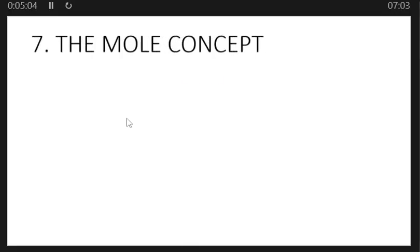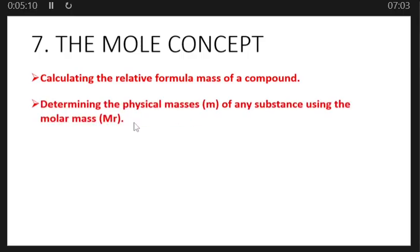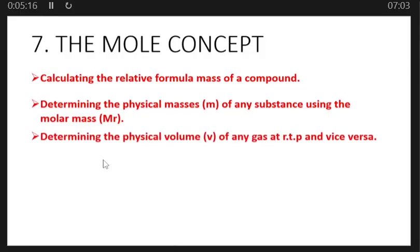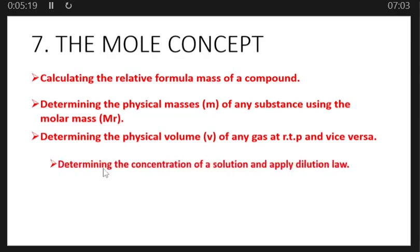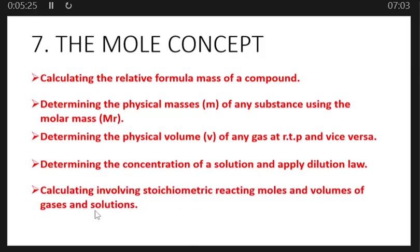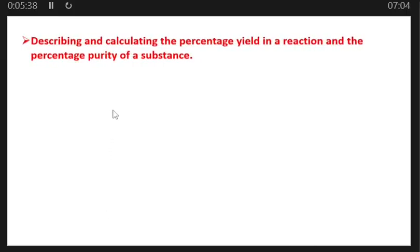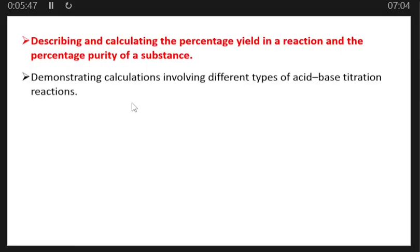Topic seven is the molar concept. Calculating the relative formula mass of a compound, determining the physical masses of any substance using the molar mass, determining the physical volume of any substance at RTP and vice versa, determining the concentration of a solution and applied dilution law, calculations involving stoichiometric reacting moles and volumes of gases and solutions, describing and calculating the percentage yield in a reaction and the percentage purity of a substance, and demonstrating calculations involving different types of acid-base reactions.